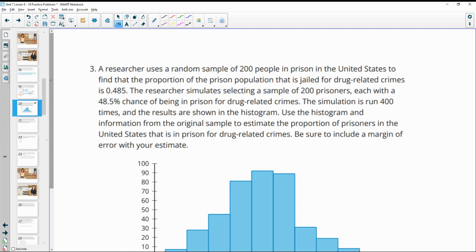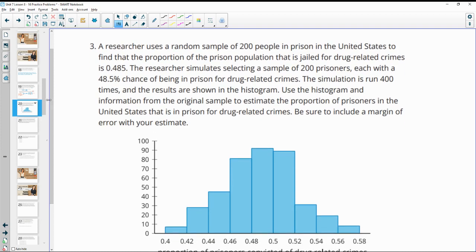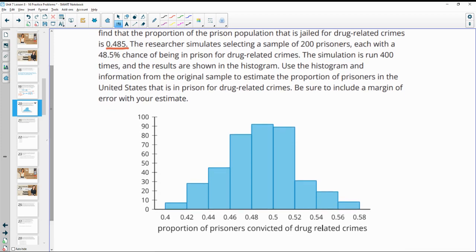Number three, researchers use a random sample of 200 people in prison in the United States to find that the proportion of the prison population that is jailed for drug-related crimes is 0.485. The researcher simulates selecting a sample of 200 prisoners, each with that 48.5% chance of being in prison for drug-related crimes. The simulation is run 400 times and the results are shown in the histogram. Use the histogram and information from the original sample to estimate the proportion of prisoners in the United States that is in prison for drug-related crimes. Be sure to include a margin of error with your estimate.